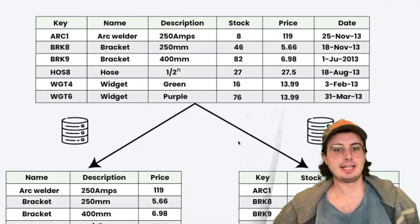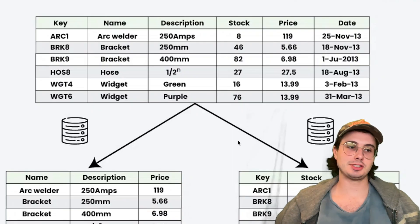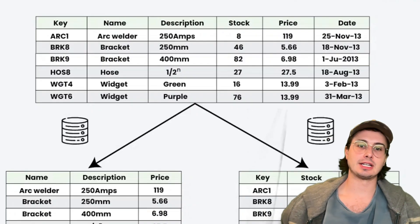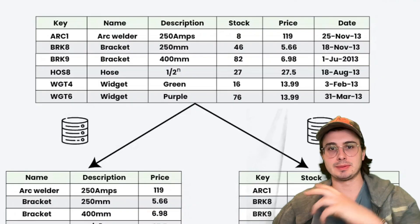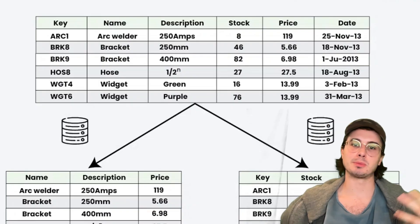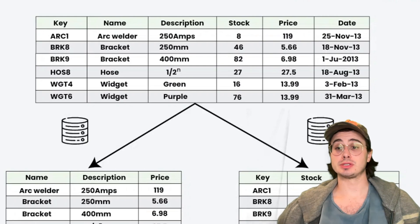The decision factors for partitioning are data volume and growth patterns, query patterns and performance requirements, maintenance windows and backup strategies, and parallel processing capabilities.